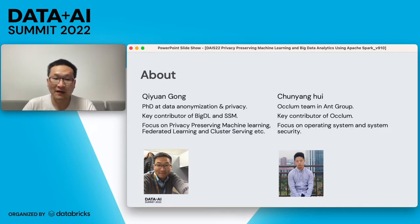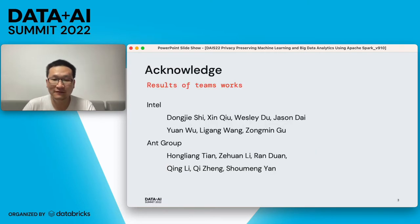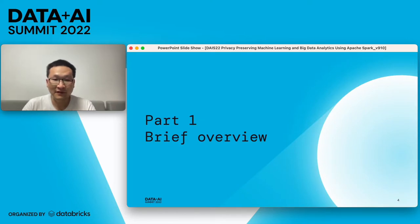Our session has two parts. In part one I will introduce why we need to enhance security in Apache Spark and how we make it. And in part two, Chen Yang will introduce security details and also library OS related technologies. This work is a result of teamwork — thank you to people from different teams and different companies for their contribution and effort to make this work happen. Let's check out our part one, the brief overview.